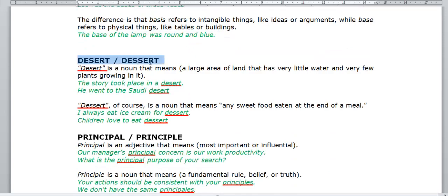Desert and dessert. Desert is a noun that means a large area of land that has very little water and very few plants growing in it. For example, the story took place in the desert. He went to the Saudi desert. Dessert, of course, is a noun that means any sweet food eaten at the end of a meal. For example, I always eat ice cream for dessert. Or, children love to eat dessert.